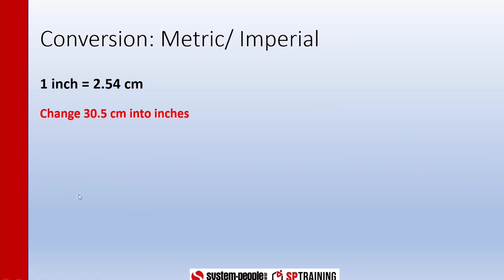So one inch is 2.54 centimeters. You'll always be given that, and we've got to change 30.5 centimeters into inches. The way we do that is we take our 30.5 and we divide it by 2.54, and we'll end up with 12.0 inches.